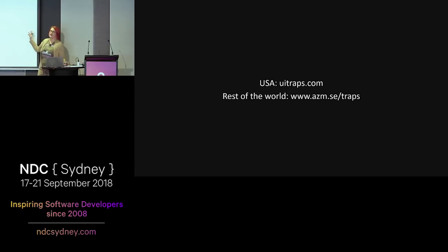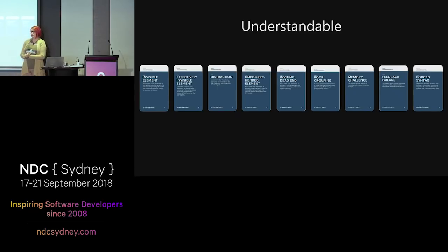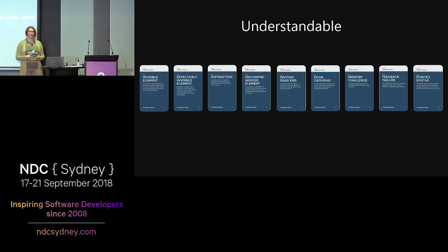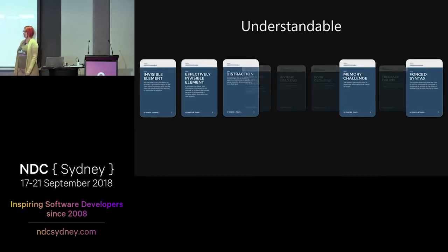If you want to read more about Tenets and Traps, here is a page — I will also put this link up in the last slide. So: first Tenet, understandable. A UI is understandable when the user is aware of the actions they can take because you have concepts in your UI they understand immediately — like if they press download, they will actually get the file. Understandable is the Tenet that has the most Traps. I will show you five of these.